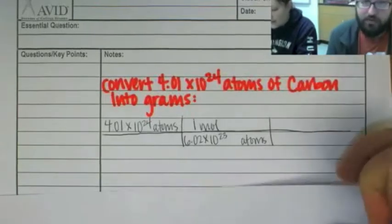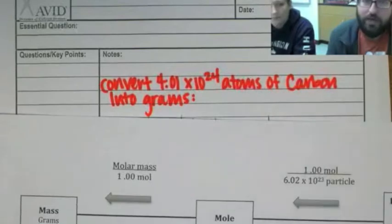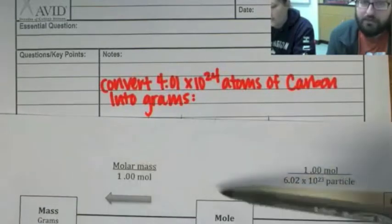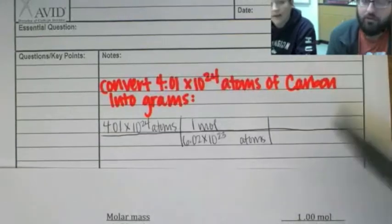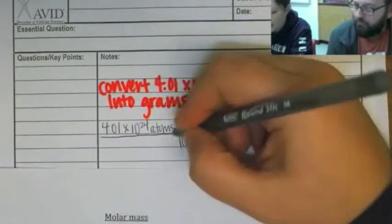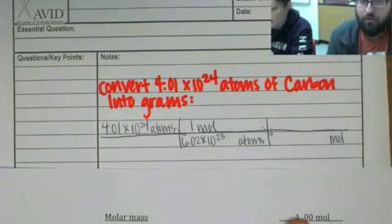So we're at moles now. We're trying to figure out grams. The molar mass is equal to 1 mole. Okay. So I know from my training, moles have to go down. So we need 1 mole. And 1 always goes with a mole right now, right? Right.